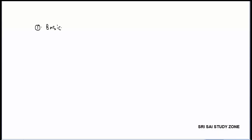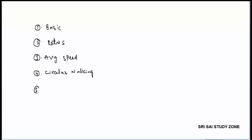The questions cover: DTS and km/m conversions, speed and time ratios, average speed, circular walking, two persons walking in the same direction and opposite direction, and a person reaching before or late. Mostly these six models are the ones from which questions are asked.